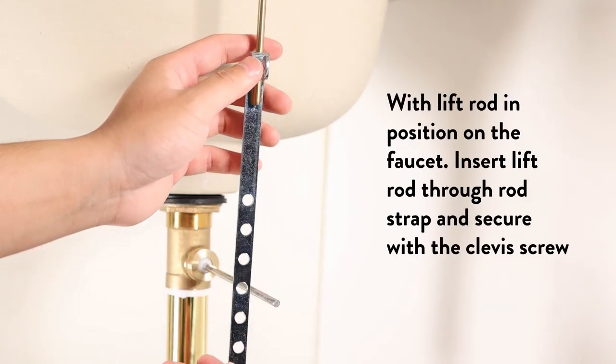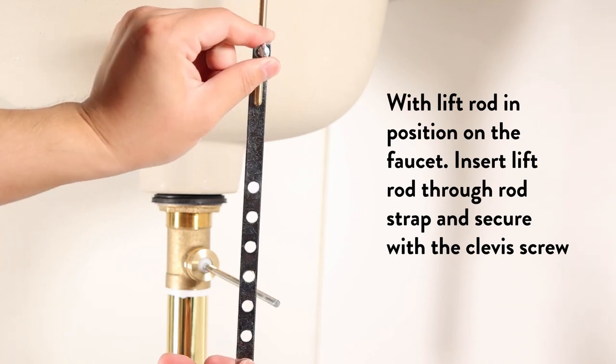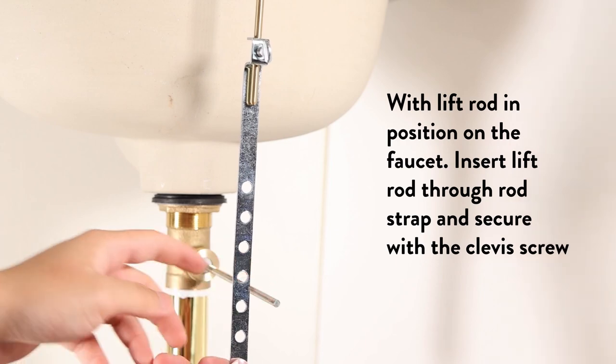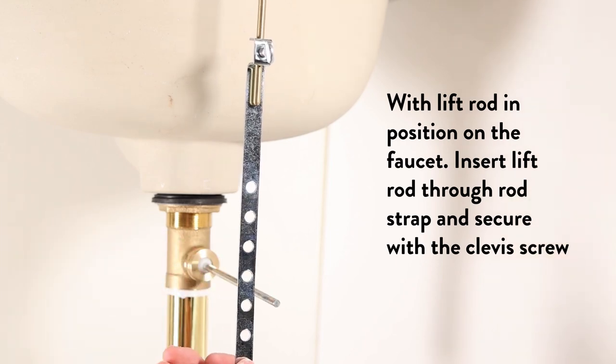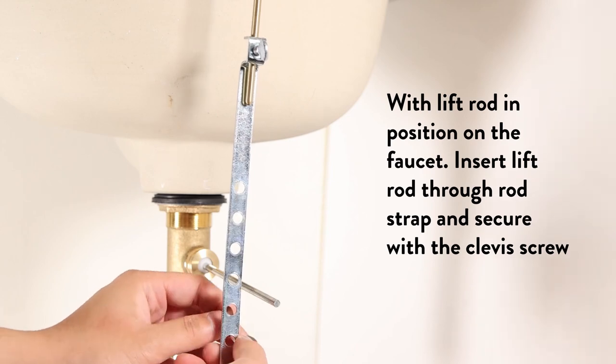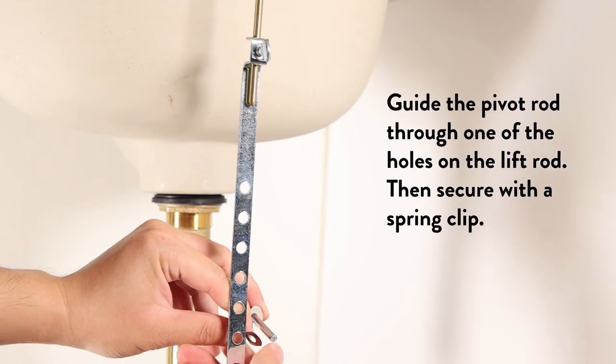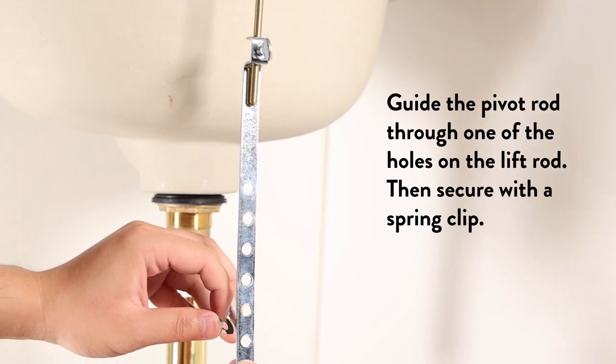With the lift rod in position on the faucet, insert lift rod through rod strap and secure with the clevis screw. Guide the pivot rod through one of the holes on the lift rod, then secure with a spring clip.